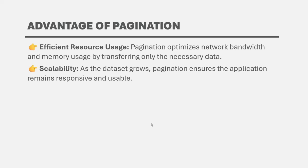We can implement pagination in the API itself. In the API, we can write logic where from the client we will receive the information about how many records we need per page and for which page we need to send data. This information will come from the client, and in the API code, we can use this information to implement pagination while sending the data to the client.